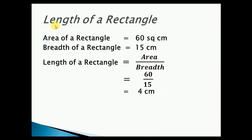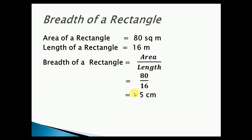Finding the length of a rectangle: if the area of a rectangle is 60 square centimeters and the breadth is 15 centimeters, then length equals area divided by breadth, which equals 60 divided by 15, giving length as 4 centimeters. Finding the breadth of a rectangle: if the area is 80 square meters and the length is 16 meters, then breadth equals area divided by length, which equals 80 divided by 16, equals 5 meters.